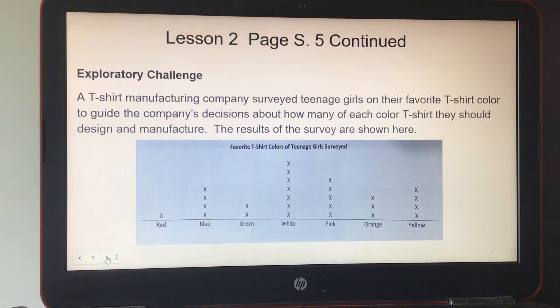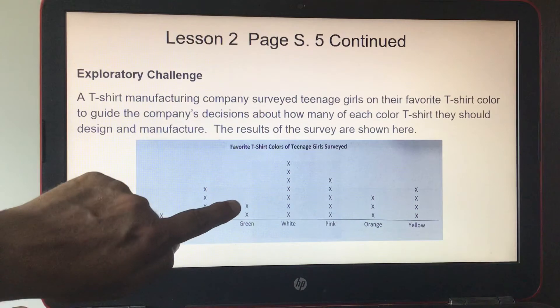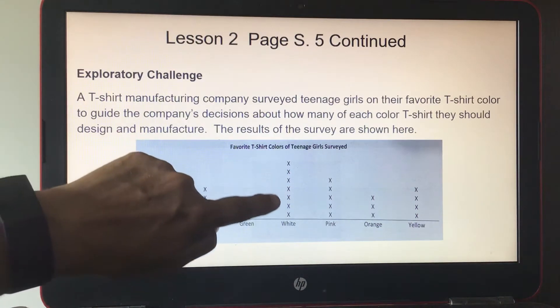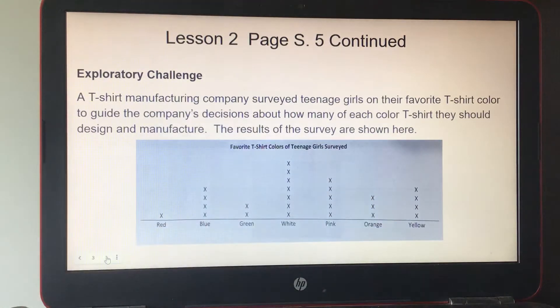All right. A t-shirt manufacturing company surveyed teenage girls on their favorite t-shirt color to guide the company's decisions about how many of each color t-shirt they should design and manufacture. The results of the survey are shown here: one red, four blue, two green, seven white, five pink, three orange, and four yellow.